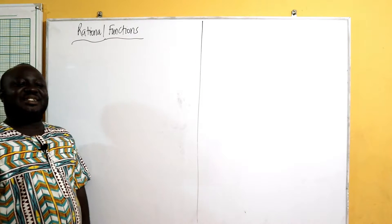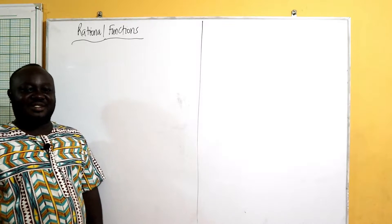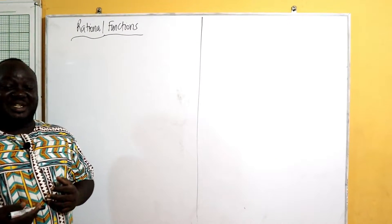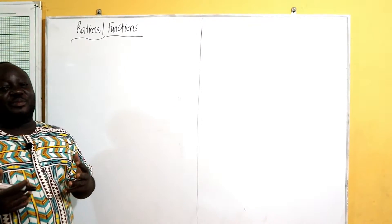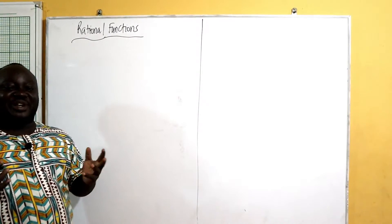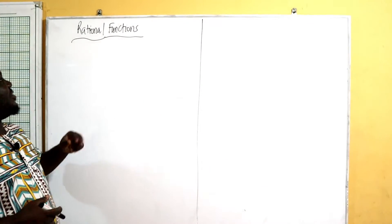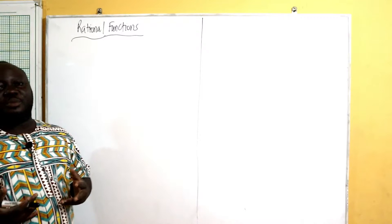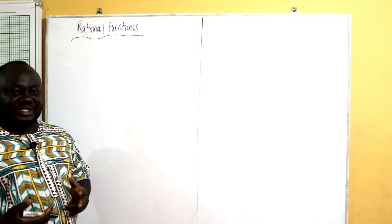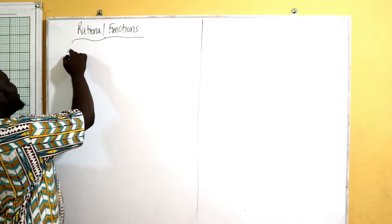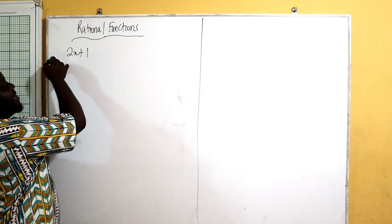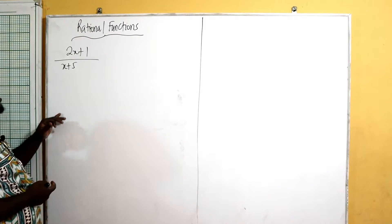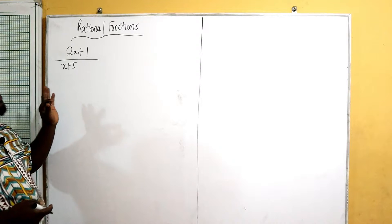Our topic for today is rational functions. We know what rational numbers are — negative and positive whole numbers including fractions and so on. Today we are going to talk about how polynomials also form part of rational functions. For example, two x plus one, which is a polynomial, divided by x plus five is also a rational function.